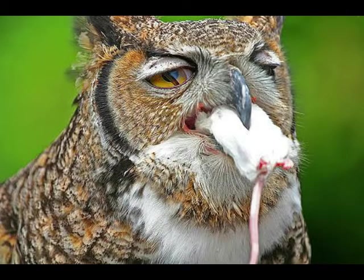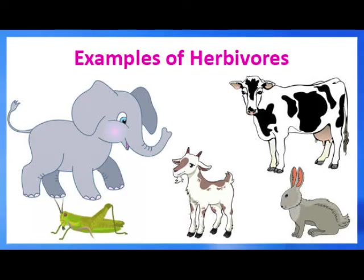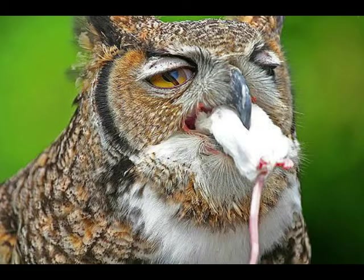Next is herbivores. Animals that eat only green plants are called herbivores. For example, rabbits, cows, goats, elephants and tortoises eat only green plants. They have broad, flat teeth that help them to chew plants.